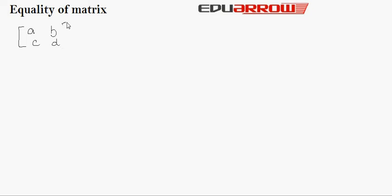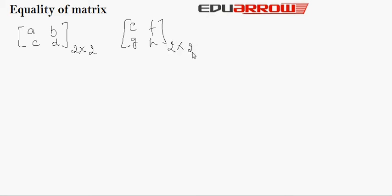For example, suppose this is matrix A and this is matrix B, of size 2 by 2. These matrices are equal because the number of rows in matrix A is equal to the number of rows in matrix B, and also the number of columns in matrix A is equal to the number of columns in matrix B.